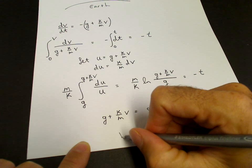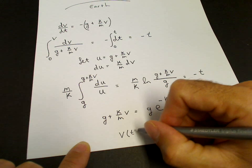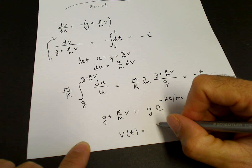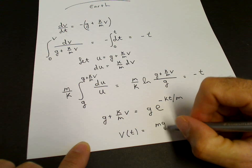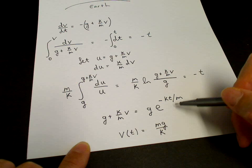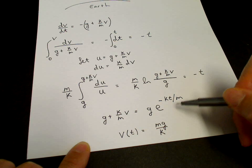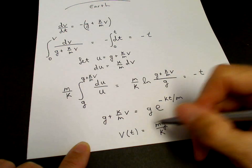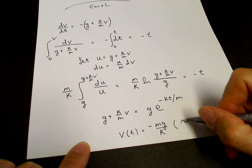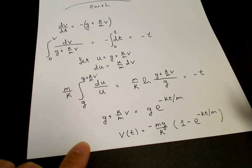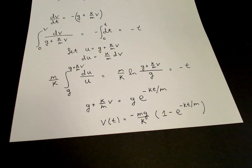And then we subtract g and multiply by m over k. We have 1 minus e to the minus kt over m minus 1, so I can pull out the minus sign. And that's the equation for the velocity.